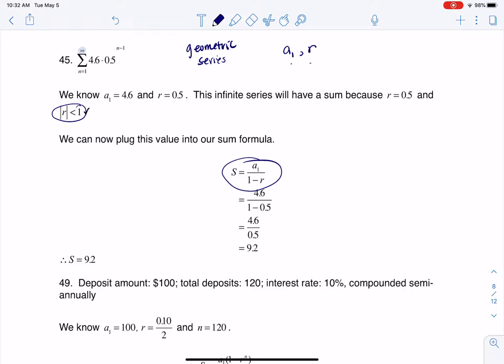So a sub 1 would be plugging in n equals 1 into this formula. That would be 4.6 times 0.5 to the 1 minus 1. That would be 4.6 times 0.5 to the 0, and anything to the 0 is 1, so that's just 4.6. So that's good to keep in mind. A sub 1 is 4.6.